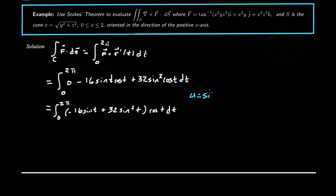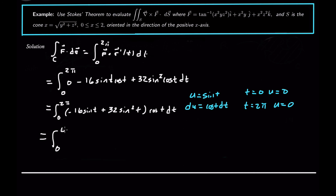To attack this integral we use the substitution u = sin t, so du = cos t dt. When t = 0, u = 0, and when t = 2π, u is also 0. So this becomes the integral from 0 to 0 of (−16u + 32u²) du. And we know the integral from 0 to 0 is just going to be 0. So this integral, strangely enough, turns out to be 0. The work done by the field is 0, even though it's not a conservative field, which happens sometimes. So this Stokes' theorem problem gives us an answer of 0.